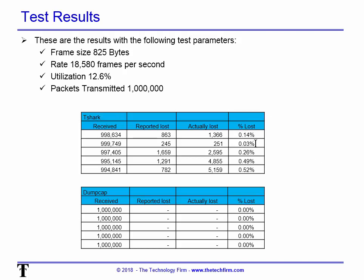That's 0.03% lost in this example. You might say that's not much, but that's 250 packets — which means if I was analyzing a session, it may incorrectly indicate a lost packet. So you want to keep that as low as possible. DumpCap, surprisingly enough, didn't miss a beat — didn't drop a packet. Awesome. So this is at 12.6%; now we're going to amp it up.